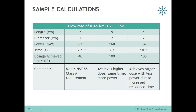We can calculate how long it will take for the water to flow through this flow cell dimension, and we can calculate the required LED power. In the second column, I've kept everything constant — still 5 centimeter length, 2 centimeter diameter, and 2.1 seconds flow time — but what I changed is the dosage requirement, going from 40 millijoules to 100 millijoules per square centimeter. You can see the power requirements go up. What we are showing is that if you can find a way to increase the residence time of the water in the flow cell, that will help reduce the LED power required.